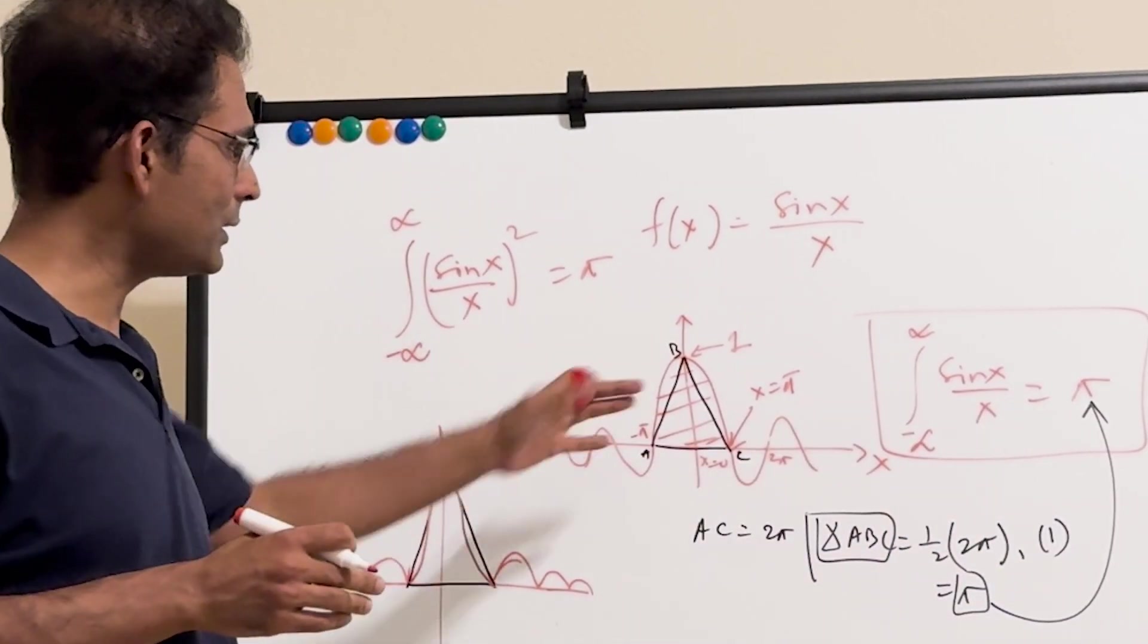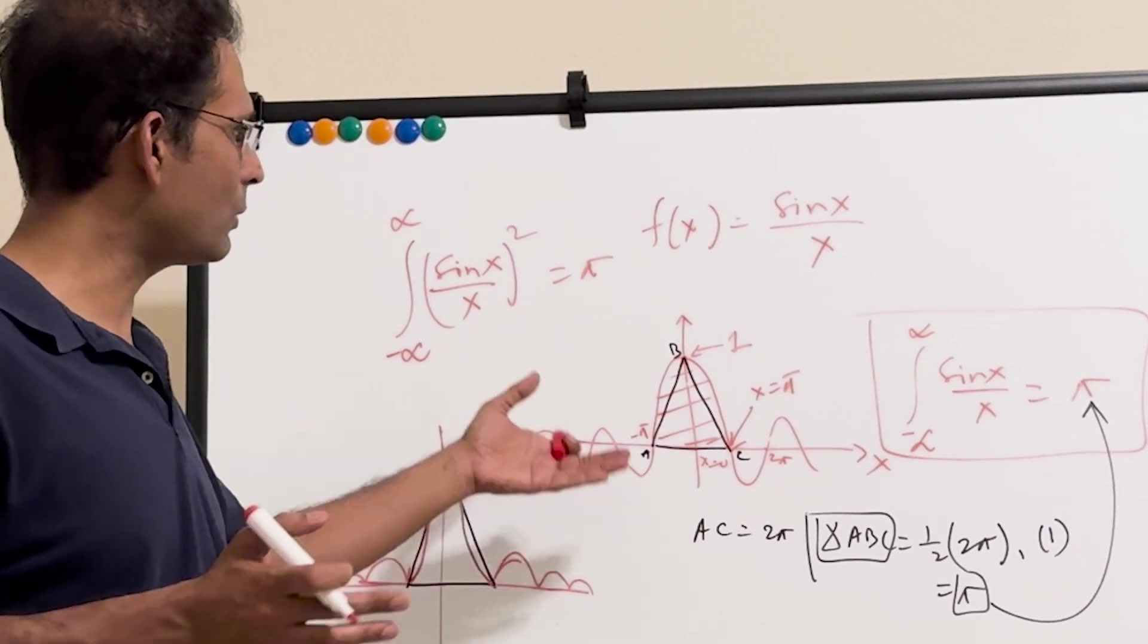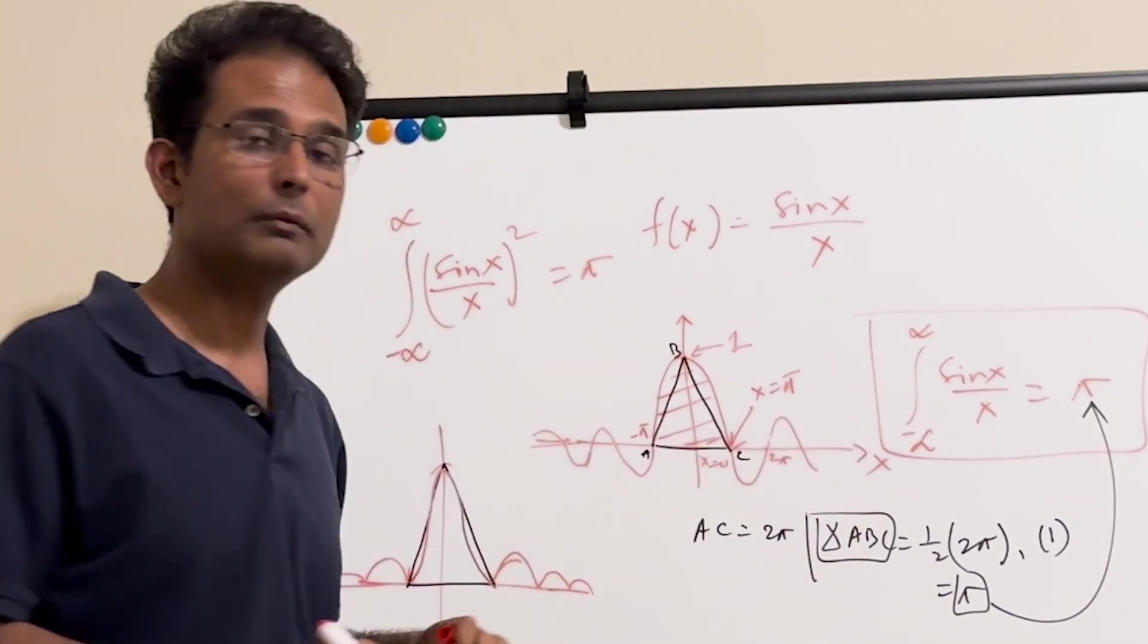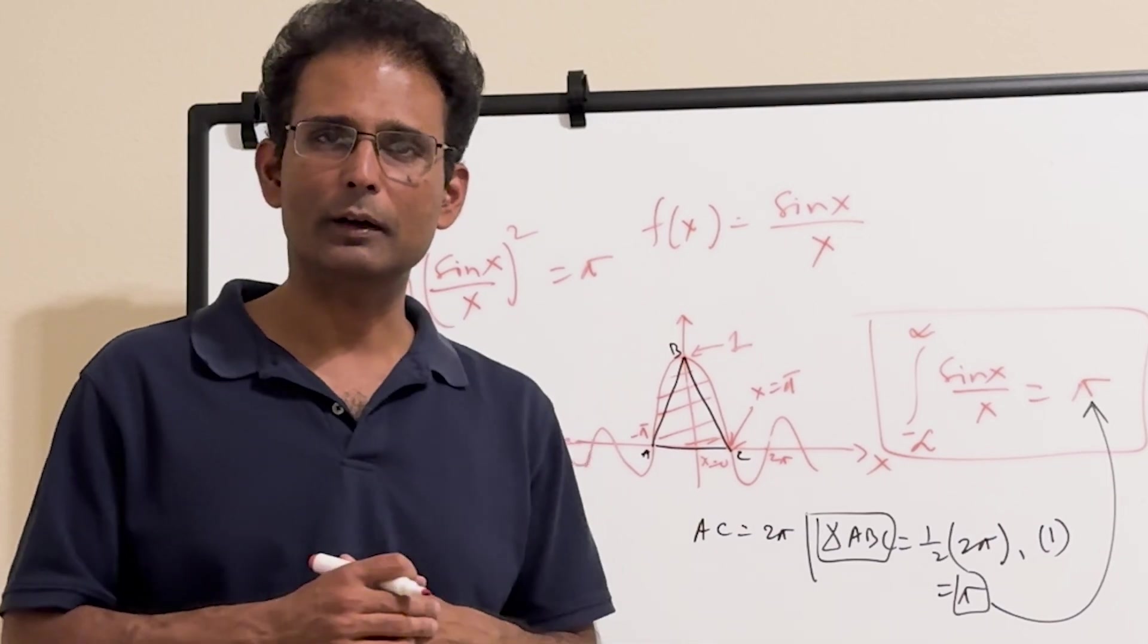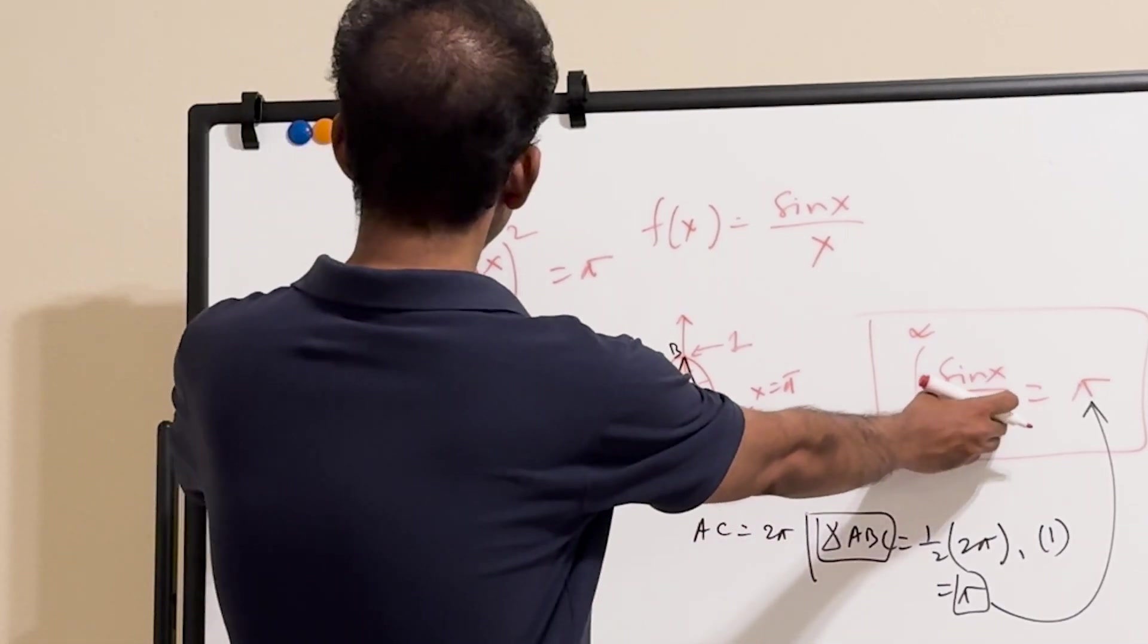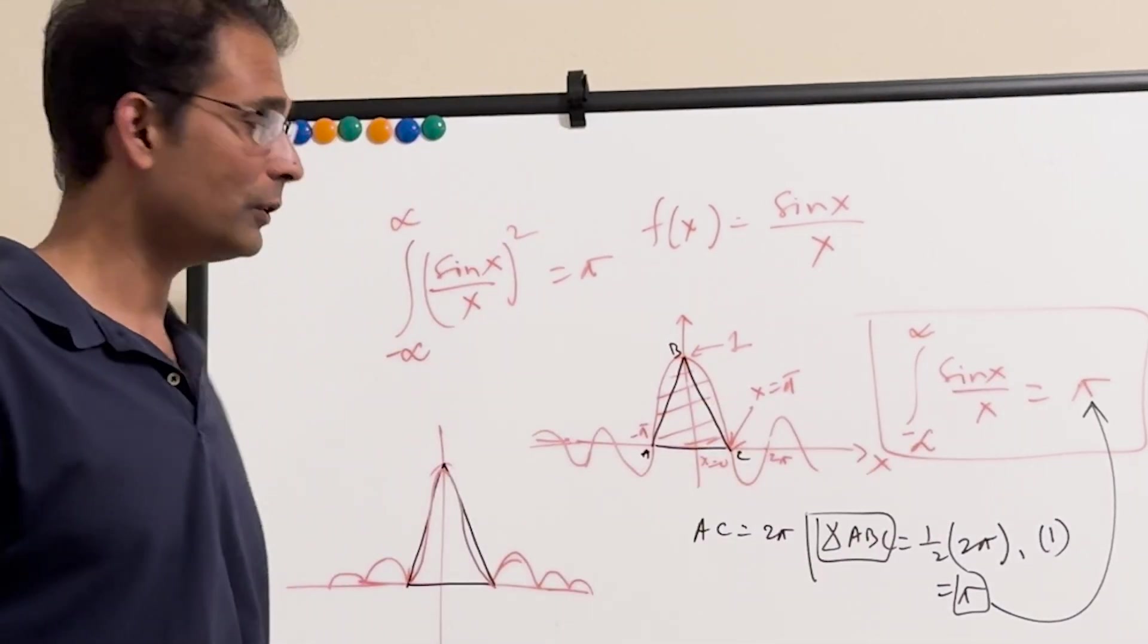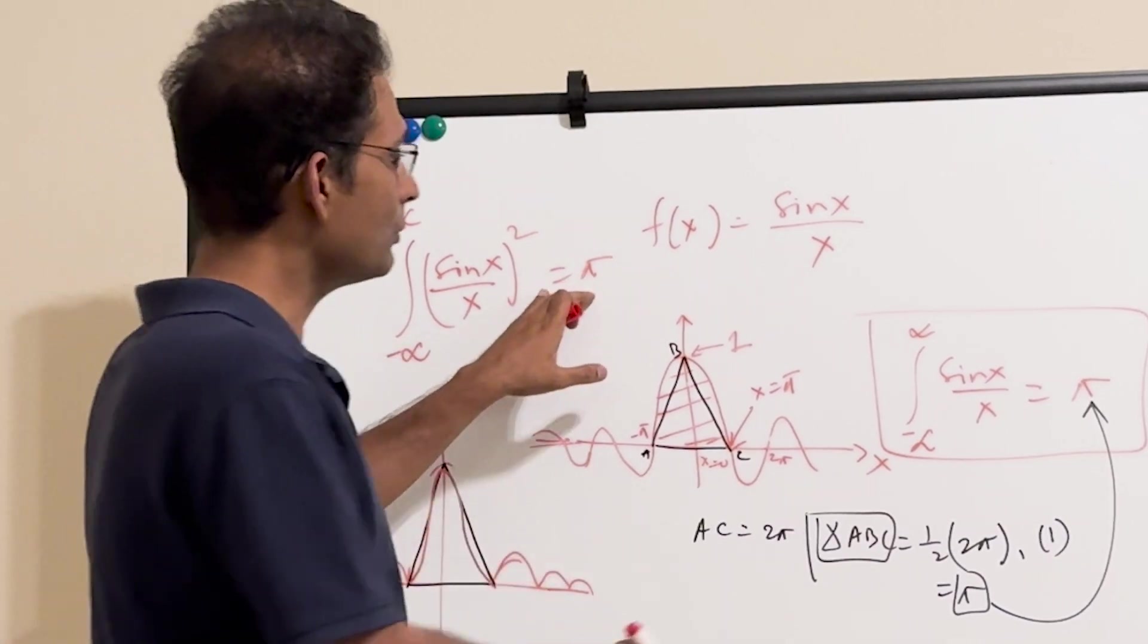But I think, well, this is just a coincidence. But I think more beautiful, more surprising thing is these two. Like this function and its square has the same integral. That's also true. So both of them are pi.